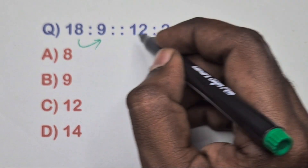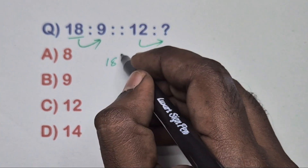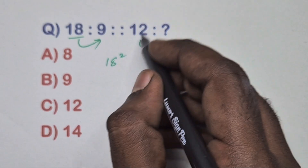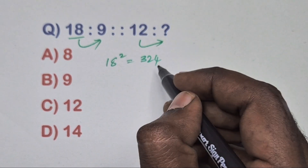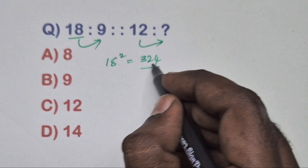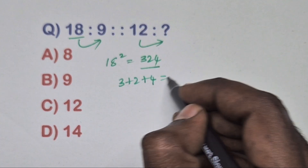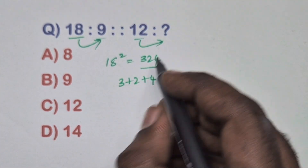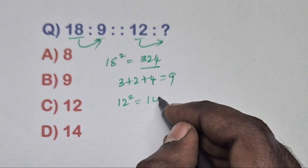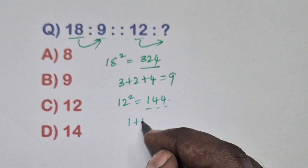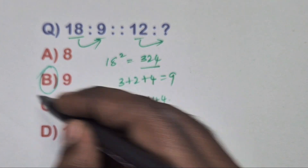Find the relation between this pair of numbers. Take 18: 18 squared is 324. Add the digits: 3 + 2 + 4 = 9. Same way, 12 squared is 144. Add the digits: 1 + 4 + 4 = 9. So option B is the correct answer.